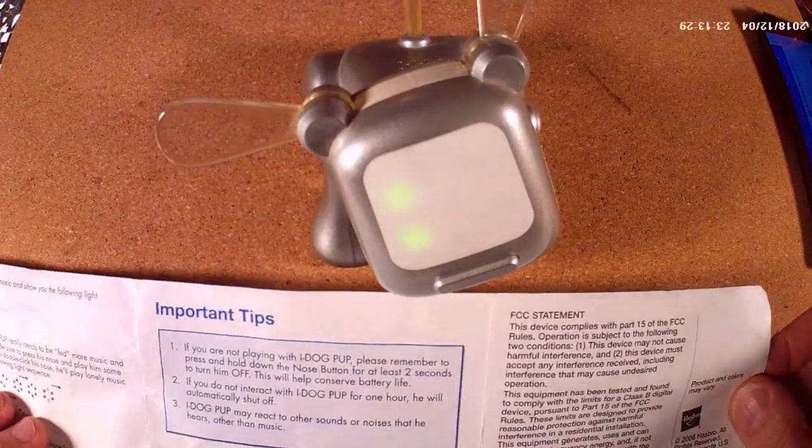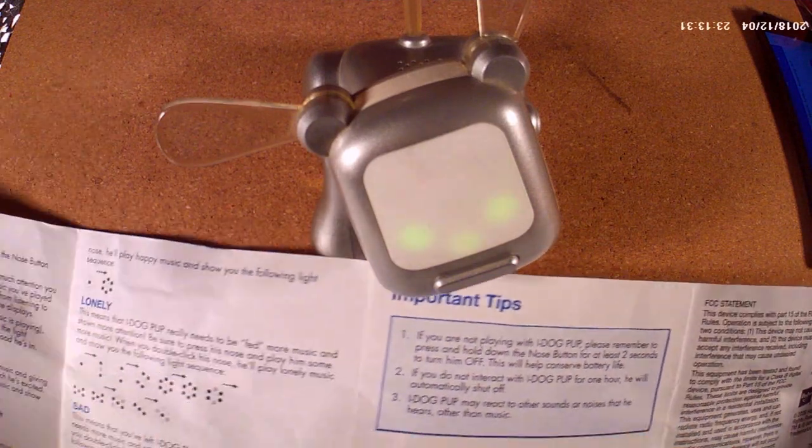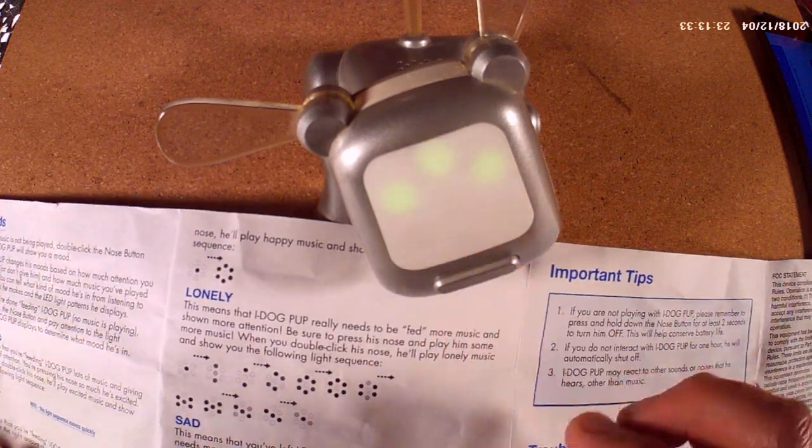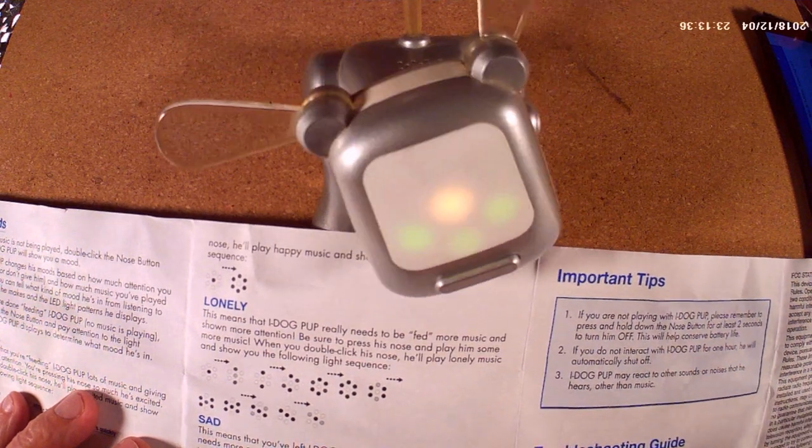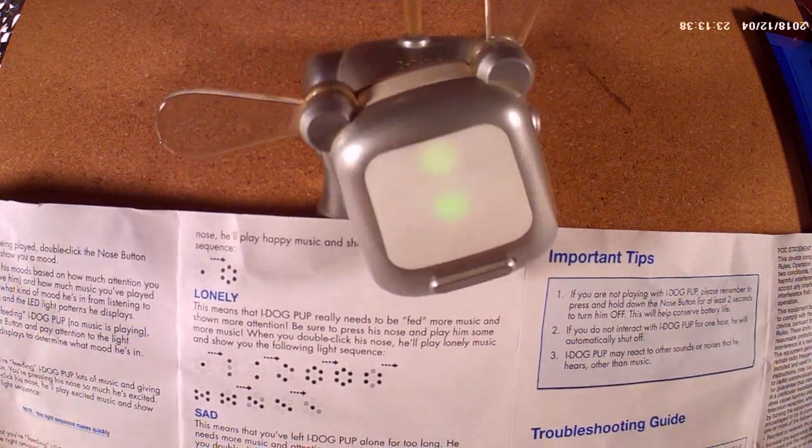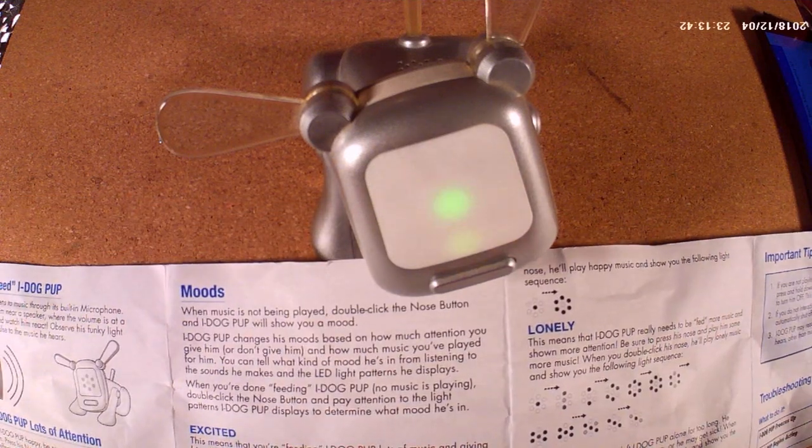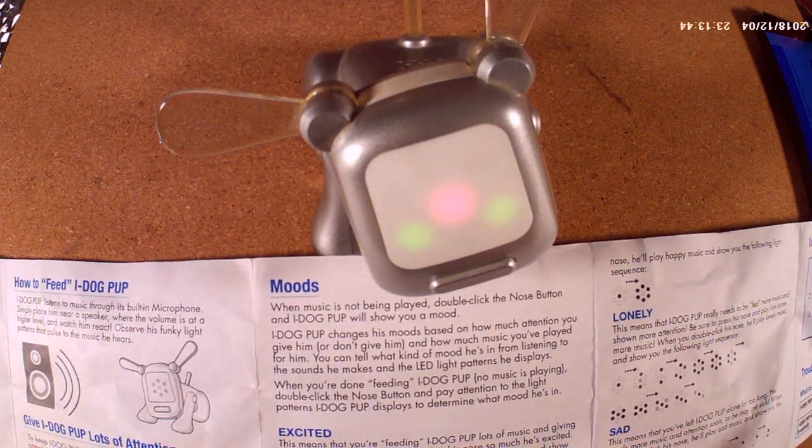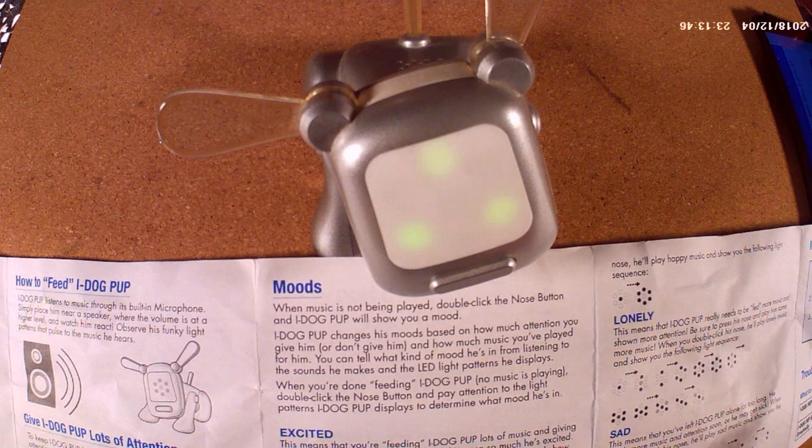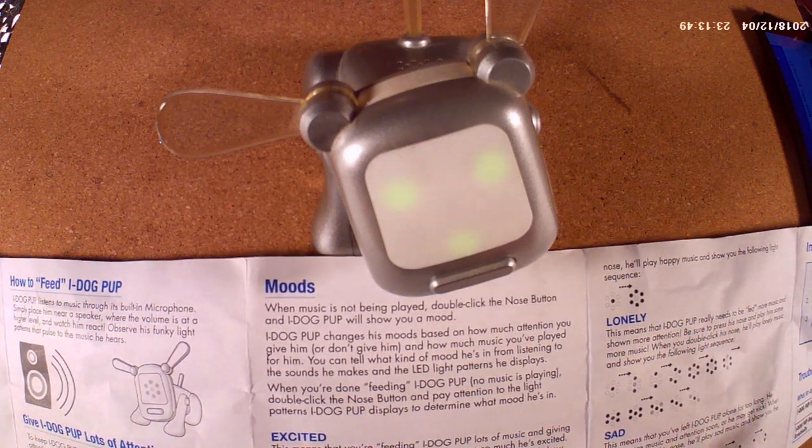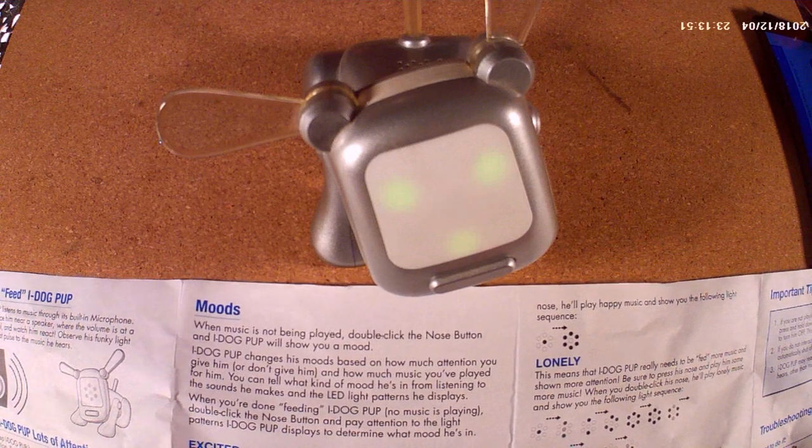What else can we find out about him? Supposed to be interpreting these lights to work out whether he's lonely or sad or excited. Well, okay.